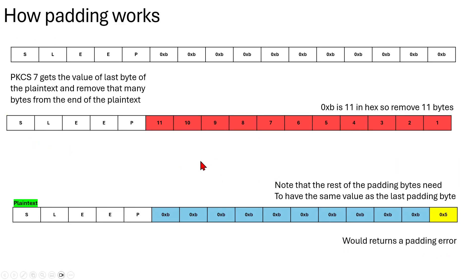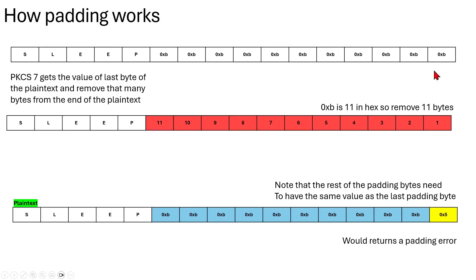This leads us to how padding works in PKCS7. PKCS7 gets the value of the last byte of the plaintext and removes that many bytes from the end of the plaintext. So in this example, since 0x0B is 11 in hex, it removes 11 bytes from the back. Notice that the last byte is the padding byte — it determines the padding.